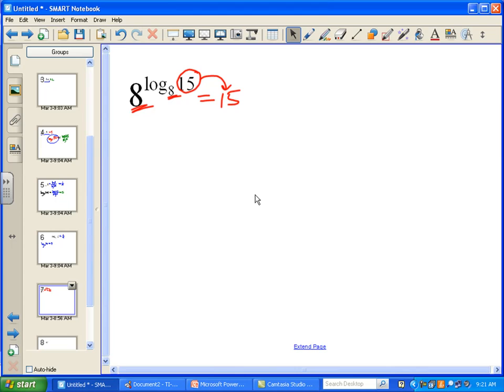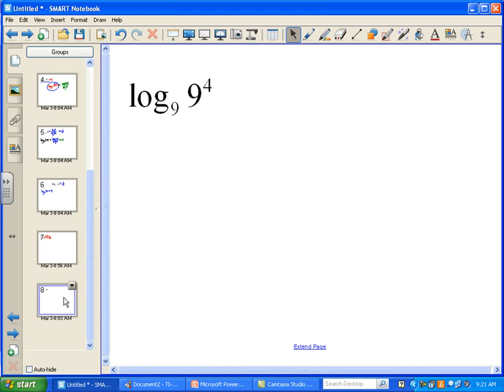So this is one of the two special cases that we were talking about when we first looked at the learning target. So here's another one, log base 9 of 9 to the 4th power. That's kind of one of those trippy ones that looks pretty difficult, but it's actually a lot more simple than it looks.